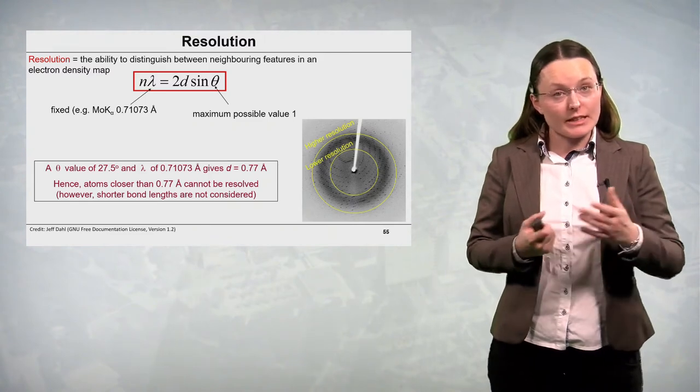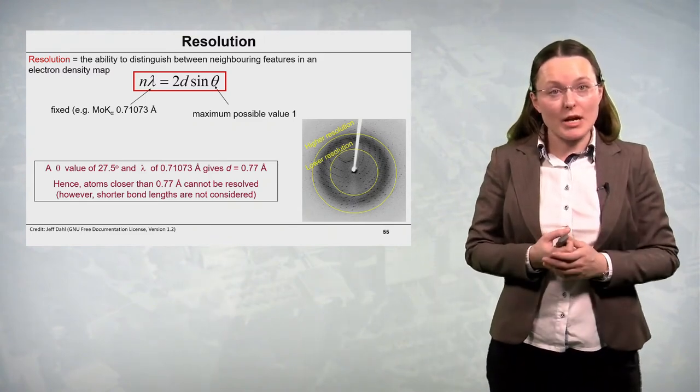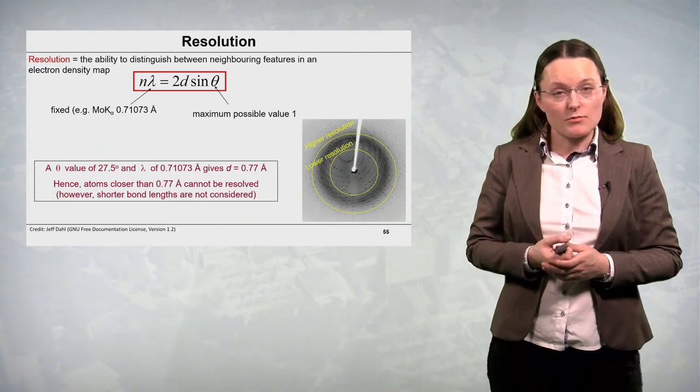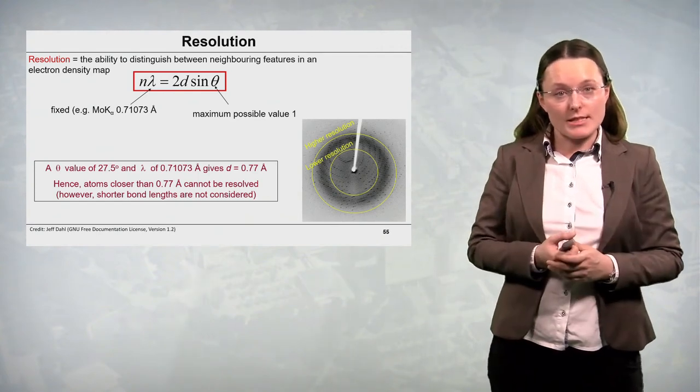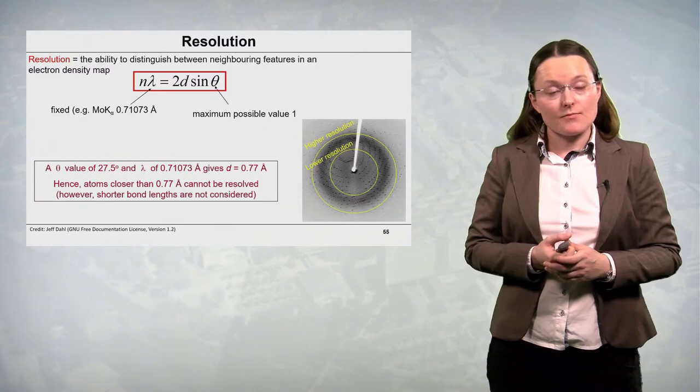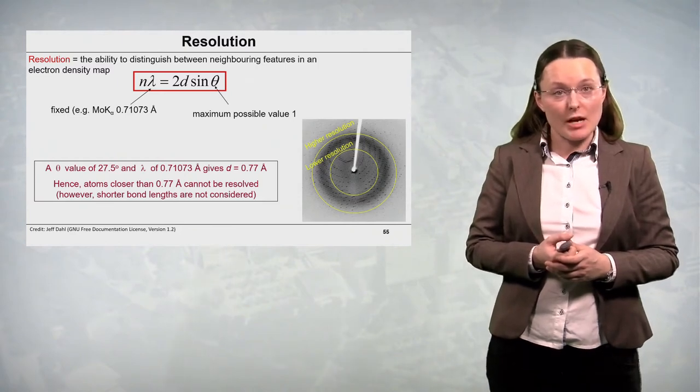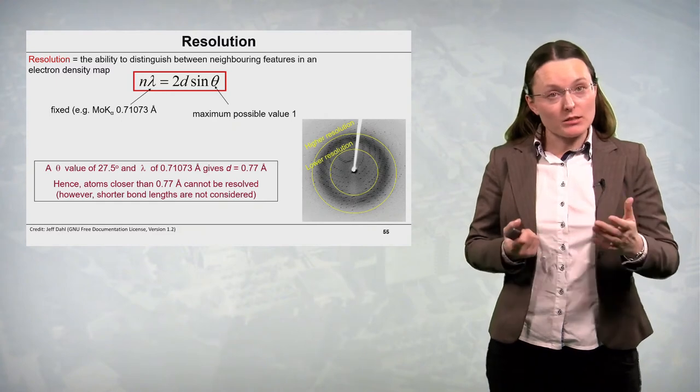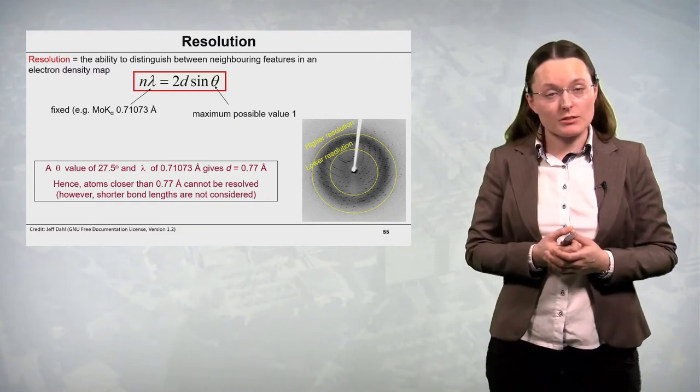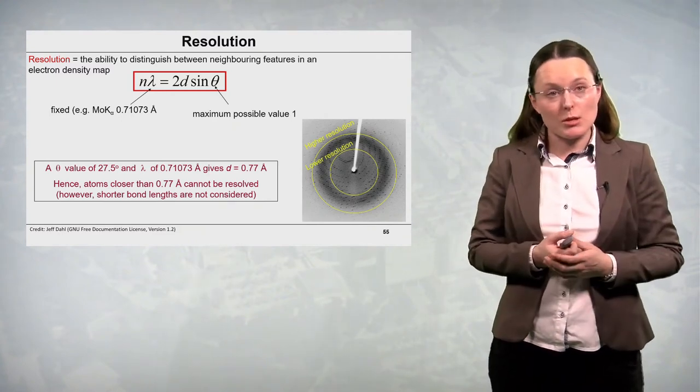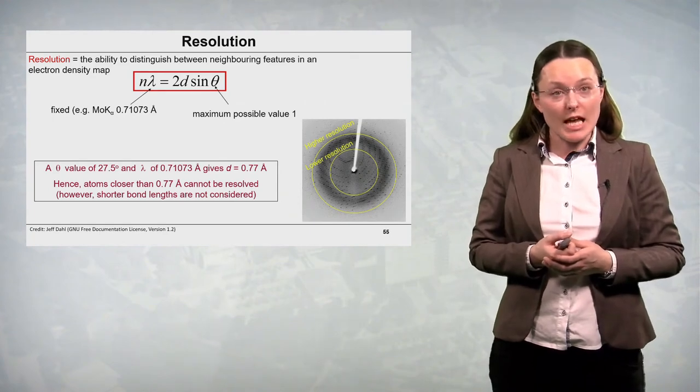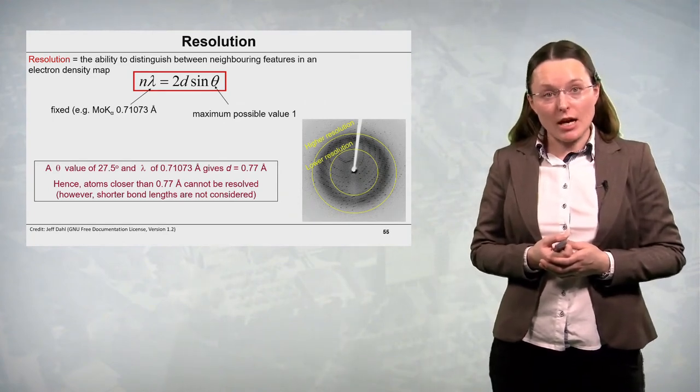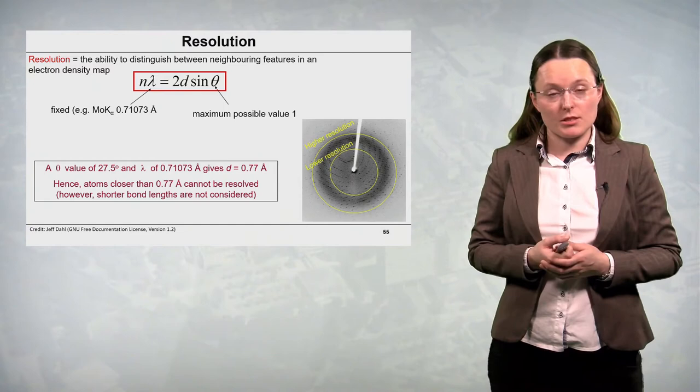You can get an idea about the resolution based on the Bragg's law. So we have the Bragg's law on the slide and in this equation the wavelength lambda is fixed. It is the one which we used in our experiment. So for instance if we used molybdenum radiation, lambda will be 0.71073 angstroms.